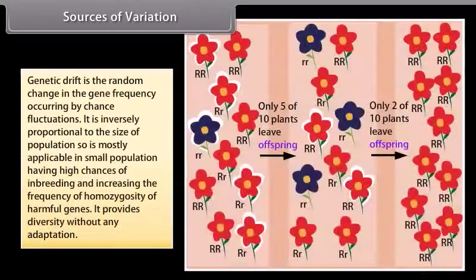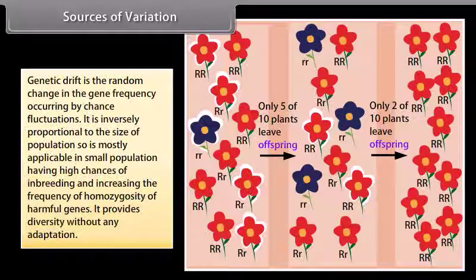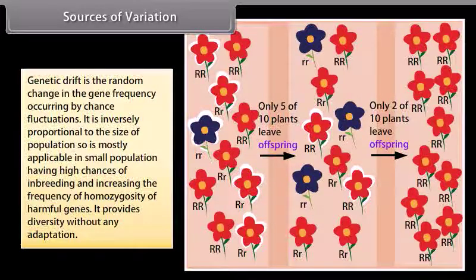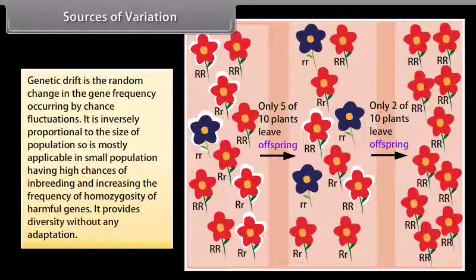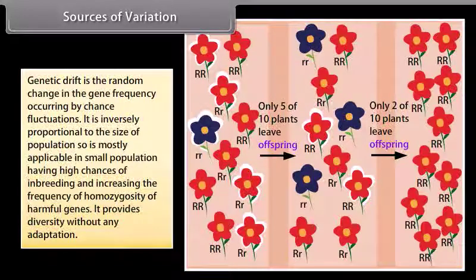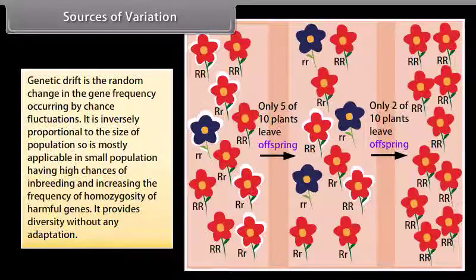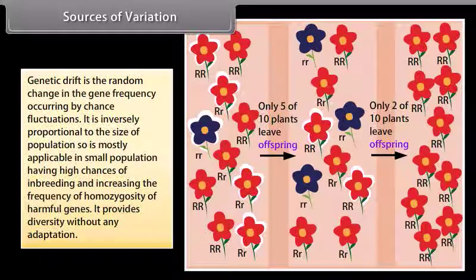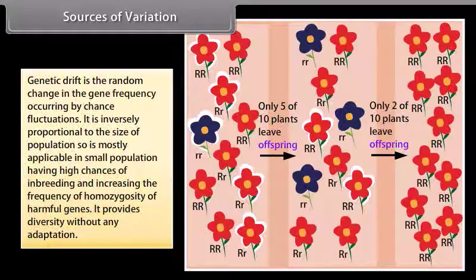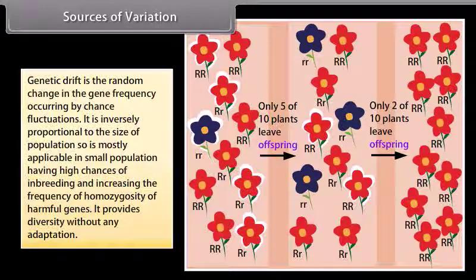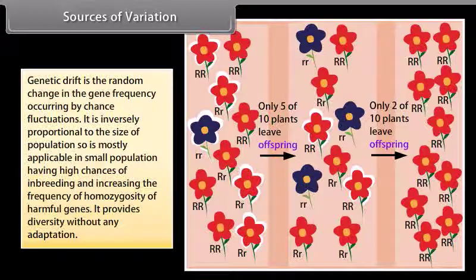Genetic drift is the random change in gene frequency occurring by chance fluctuations. It is inversely proportional to the size of population, so is mostly applicable in small populations, having high chances of inbreeding and increasing the frequency of homozygosity of harmful genes. It provides diversity without any adaptation.